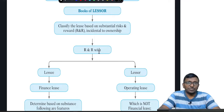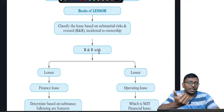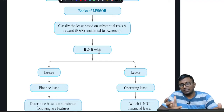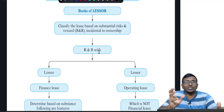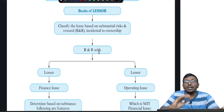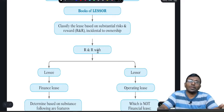Hi friends, let's look at the Lessor's Books of Accounting under Ind AS 116. In case of a lessor, you are supposed to classify the lease — either as an operating lease or a finance lease. Classification is based on which party holds the risks and rewards related to ownership. If the risks and rewards are with the lessee, it is a finance lease; if with the lessor, it is an operating lease.